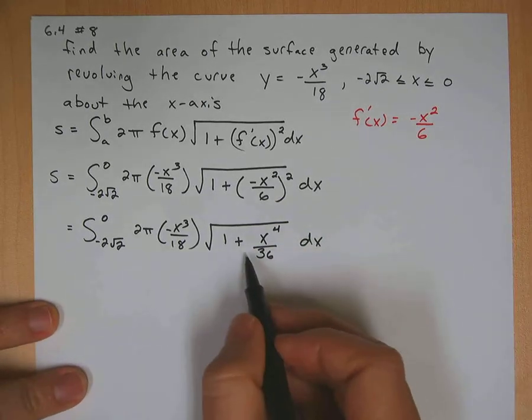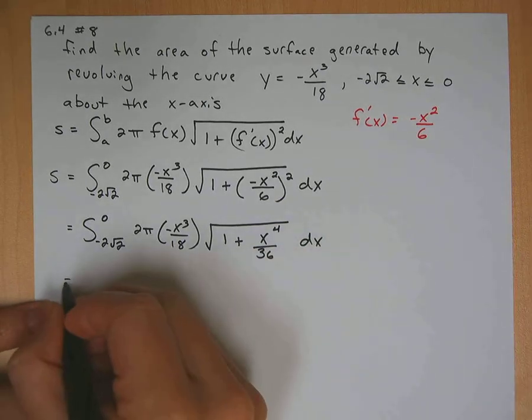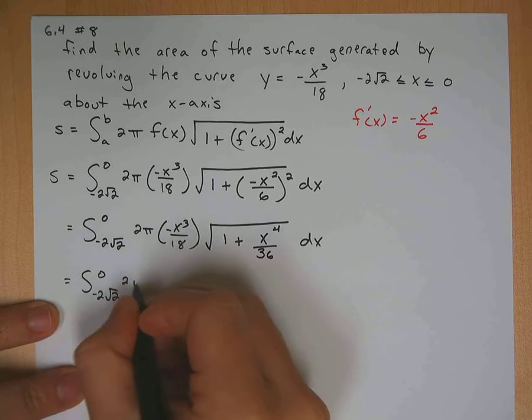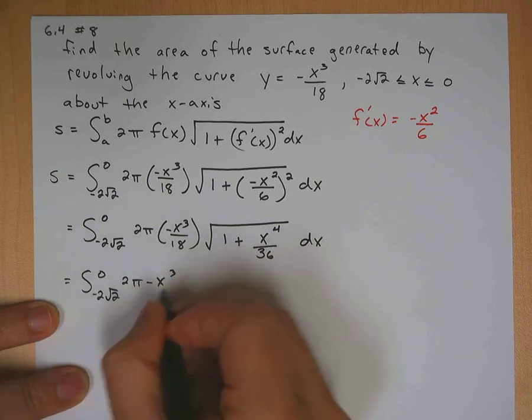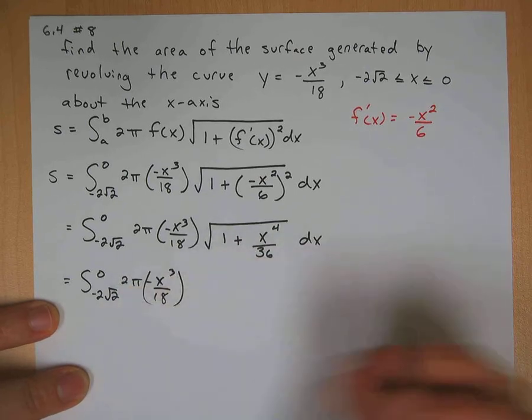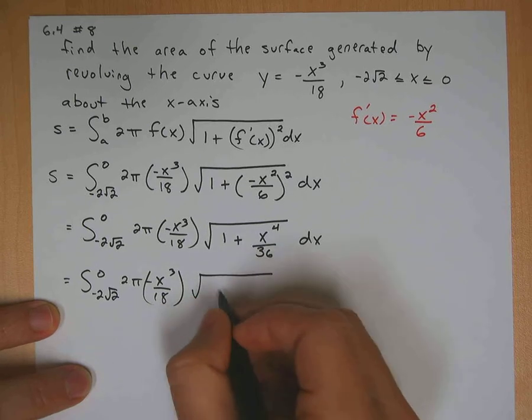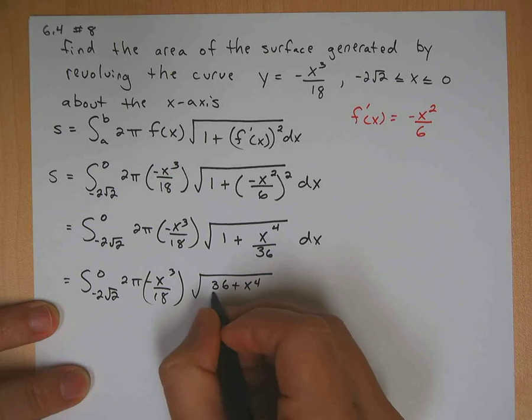Okay, and now I'm going to combine these using a common denominator. Negative 2 square root 2 to 0, 2 pi, negative x cubed over 18. You can reduce that if you want. Maybe I'll do that in the next step. Let's go ahead and bring that together. So it would be 36 plus x to the 4 over 36.